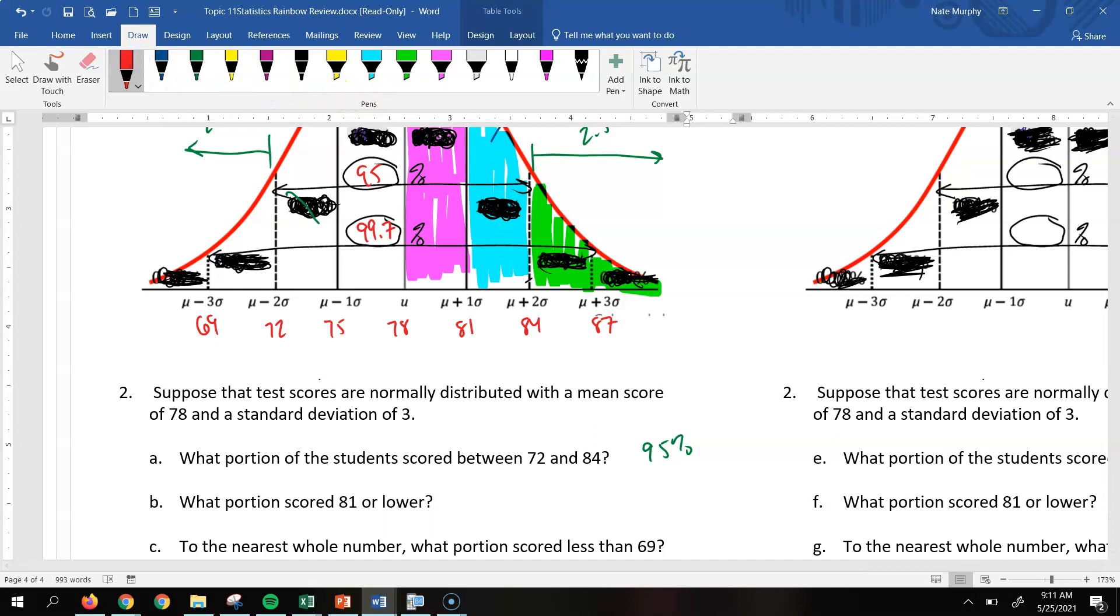What portion scored 81% or lower? Now for that one, 81% or lower is right here, and it's everything to the left of that. Well, I know that from here down would be 50%. And remember, that purple section represents 34%. So we can just add together 50 and 34 and get 84%.